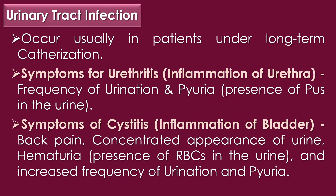The first clinical disease caused by Proteus mirabilis is urinary tract infection. UTIs occur usually in patients under long-term catheterization, and the bacteria have been found to move and create encrustations on urinary catheters. Symptoms of urethritis, or inflammation of the urethra, include frequency of urination and pyuria — the presence of pus in the urine. Symptoms of cystitis, or inflammation of the bladder, include back pain, concentrated appearance of urine, hematuria, presence of odor in the urine, increased frequency of urination, and pyuria.